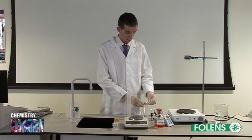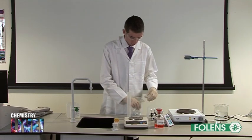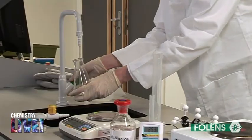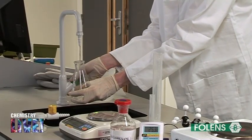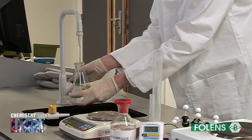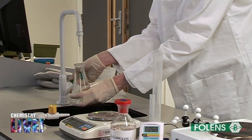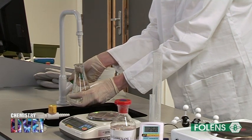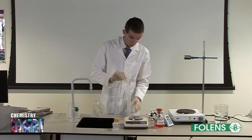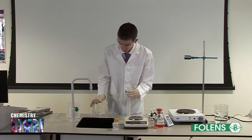Now we will find the total volume of the conical flask. Fill the conical flask completely with water. For accuracy, pour the water into a 100 centimeters cubed graduated cylinder.